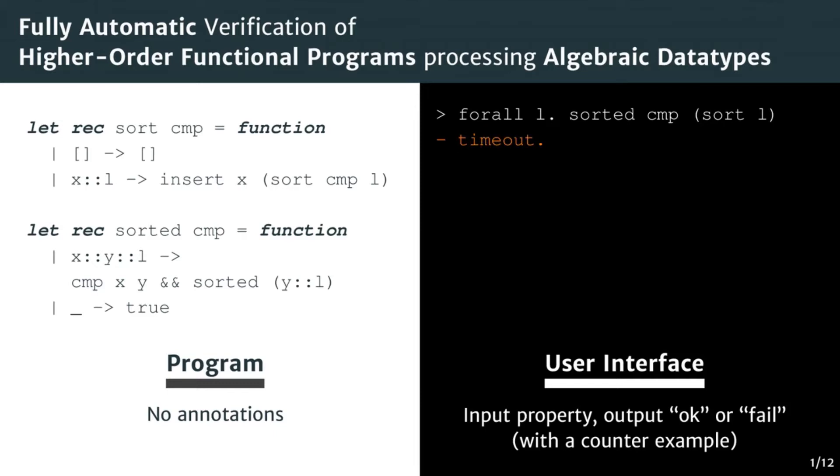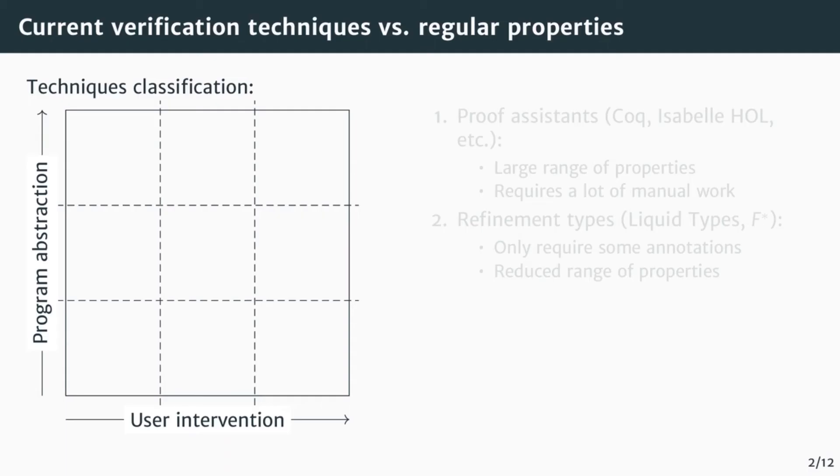To understand why our contribution was necessary and how it relates to other high order functional program verification techniques, I like to place every technique on this diagram. Many properties can be verified by simplifying or abstracting the behavior of the input program in a certain way. So we can classify verification techniques according to the abstraction they can generate. On the bottom, we put techniques that can verify properties with any regular abstraction. On the top, we put techniques that can verify property with any abstraction.